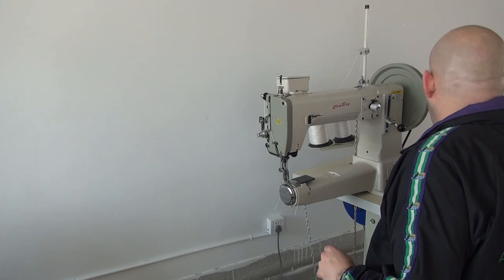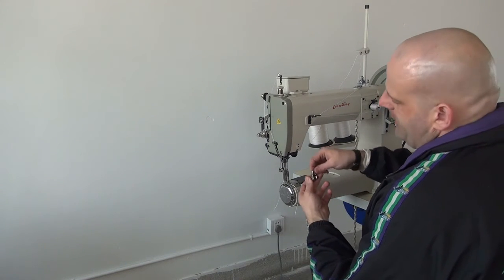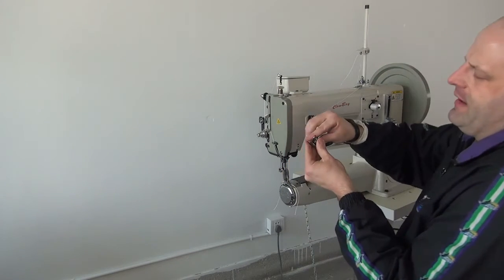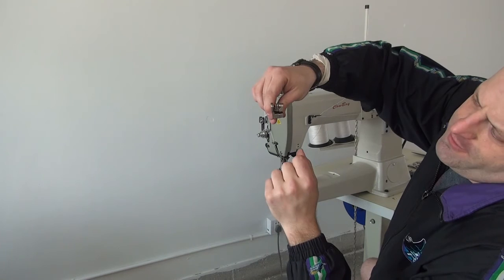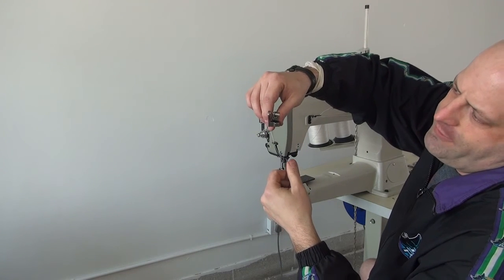In addition to that, we also have our piping, cording, welting foot. And if you look very closely, you'll be able to see that there's a groove cut in the bottom of the center foot, which works well for sewing piping, cording, and welting.